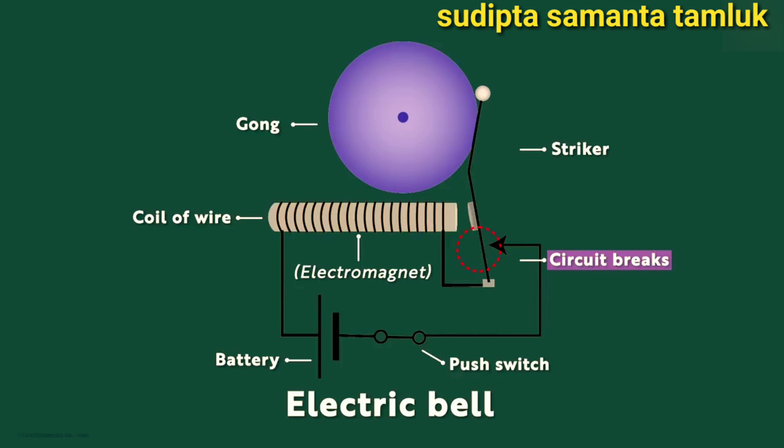And when the circuit breaks, the current stops flowing. So this electromagnet gets demagnetized after which the soft iron goes back to its start position. This process will continue until the switch is open again. As soon as we release the push button, the circuit breaks and the bell stops ringing.